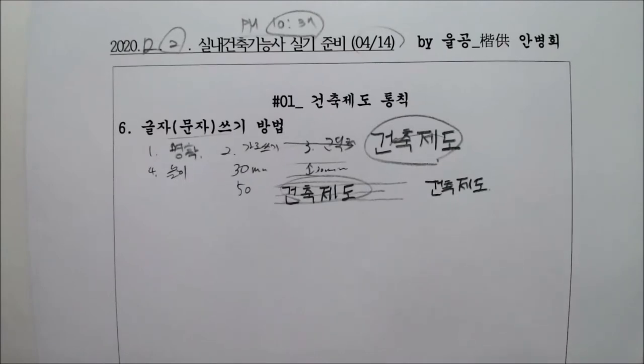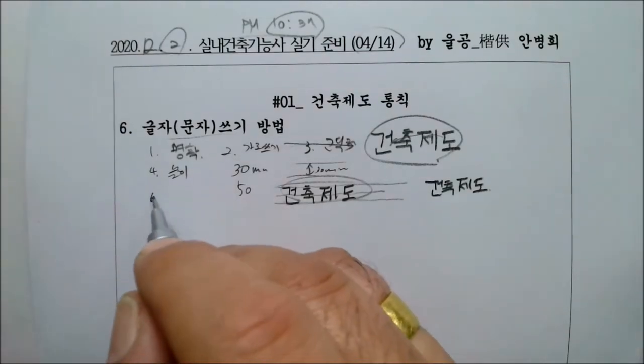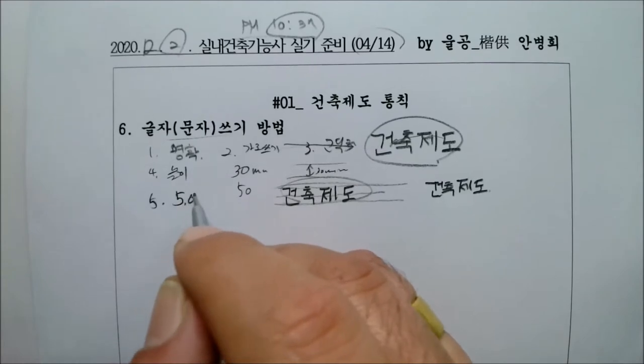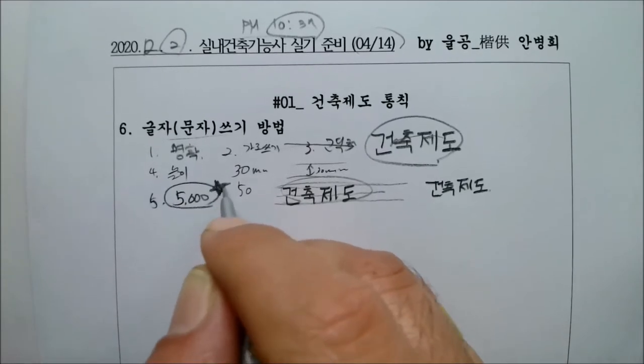그 다음에 여러분들 4자리 이상 숫자를 찍을 때 무조건 일반적으로 콤마를 찍습니다. 5000이다. 이거 상식이에요. 상식. 아시겠죠?